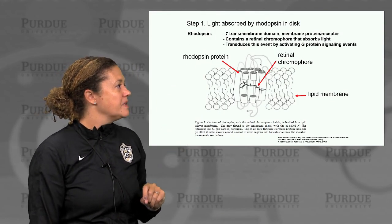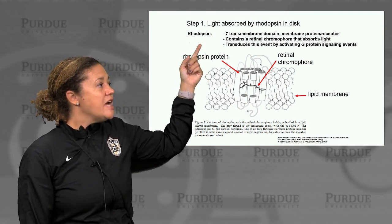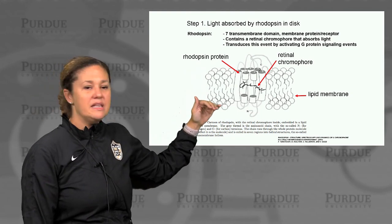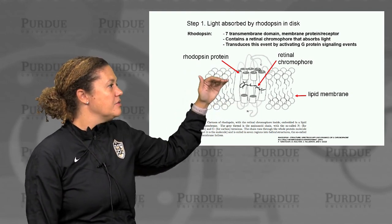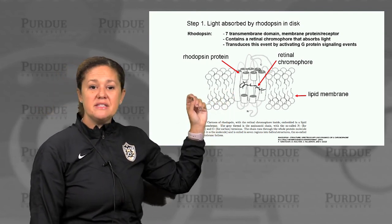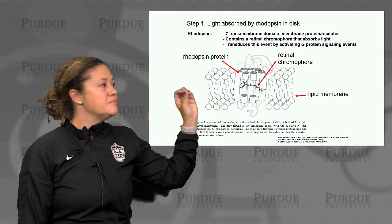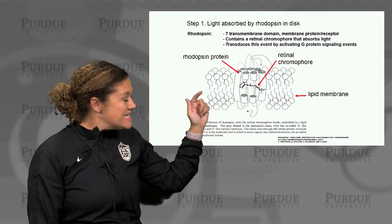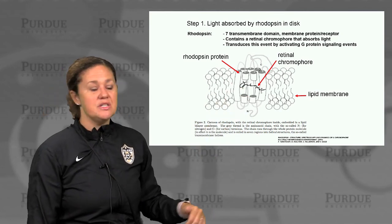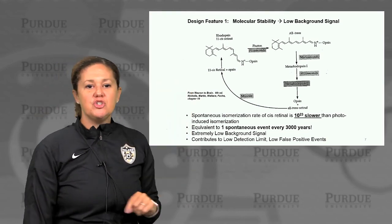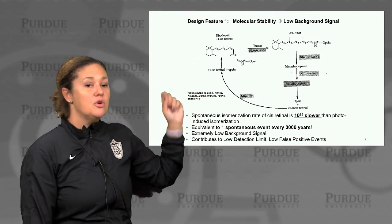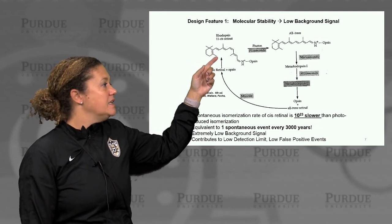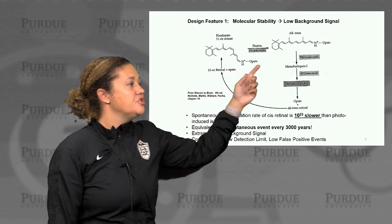Let's look a little bit closer at step one. Light is absorbed by rhodopsin in the disk. Rhodopsin is a membrane protein with seven transmembrane domains — domains that sit in the lipid bilayer spanning it. It contains a retinal chromophore, which is the molecule that absorbs the light. This photon absorption event is transduced by activating G-protein coupled signaling events from this protein into the cell. This brings us to our first design feature: molecular stability, which gives us very low background noise. When this retinal molecule in rhodopsin absorbs a photon, there's an isomerization event — we go from cis-retinal to an all-trans state.